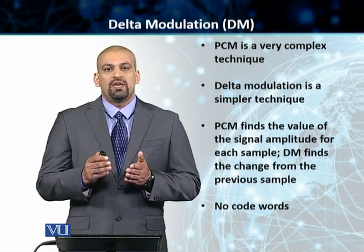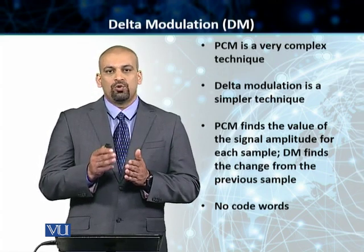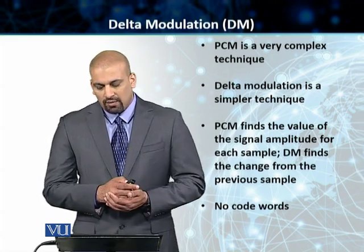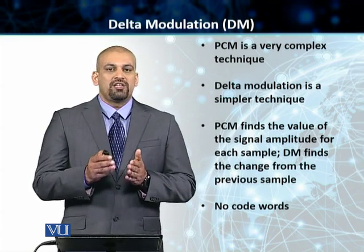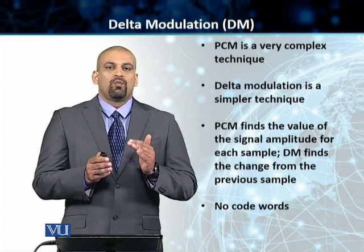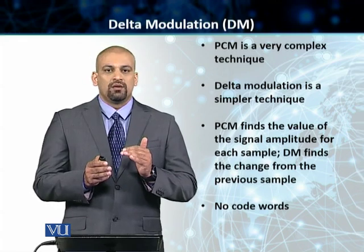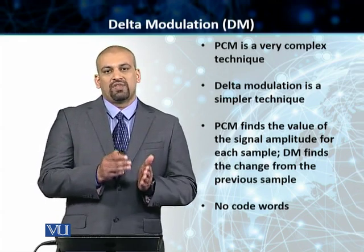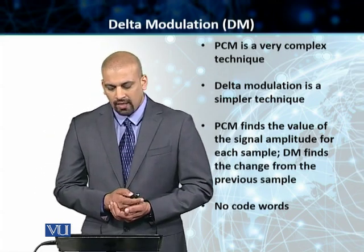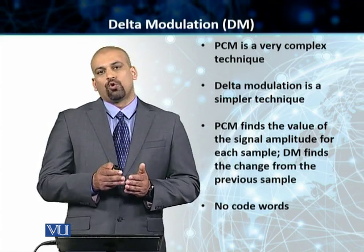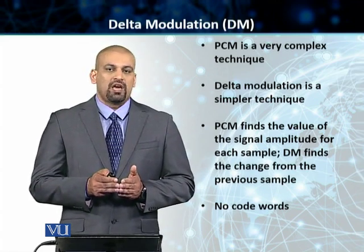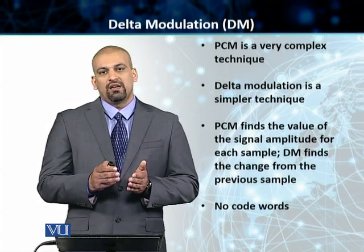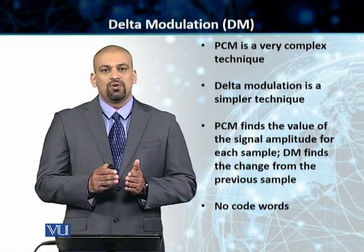In PCM, we work with different pulses and we work with the amplitude of each one of those pulses or samples. In Delta Modulation, we find the change from the previous sample — what the signal is doing from one sample to the next — and based on that, we try to create a Delta Modulated signal of that analog signal. The noteworthy thing is that there are no codewords in Delta Modulation. We actually send a stream of bits as it is; we do not divide or distribute these bits into distinct codewords.